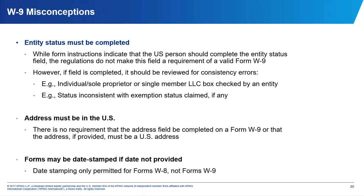A W-9 does not need to be invalidated because it lacks a U.S. address — U.S. persons are taxed on worldwide income regardless of where they live, so a non-U.S. address doesn't matter. Regarding date stamping: Treasury regulations require the person completing the form to date it. The W-8 instructions allow a withholding agent to date-stamp a W-8 on the date they receive it if it wasn't dated, but we don't have that same consideration for a W-9 — it needs to be dated by the person completing the form.